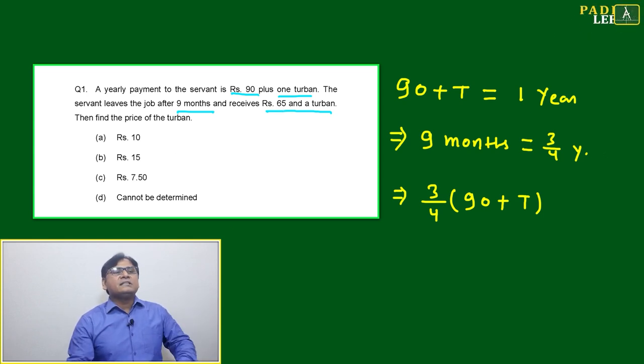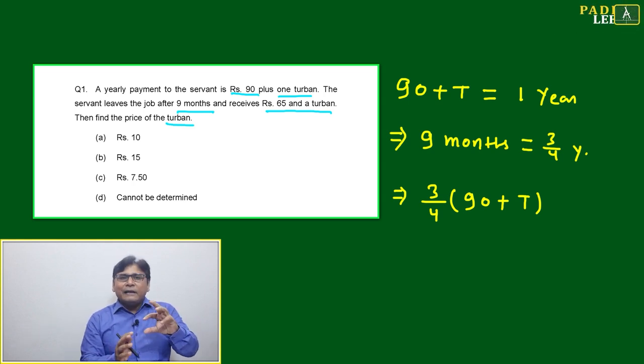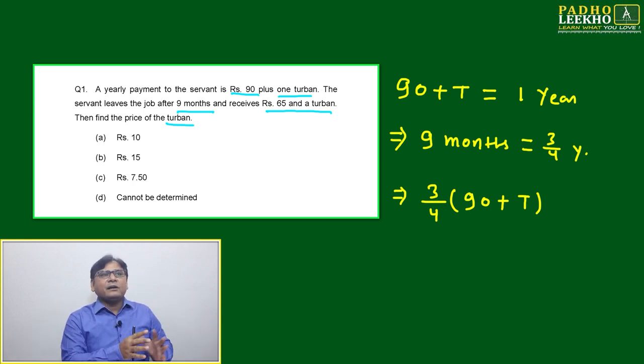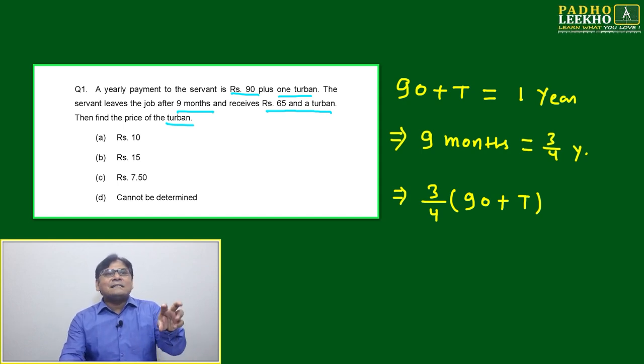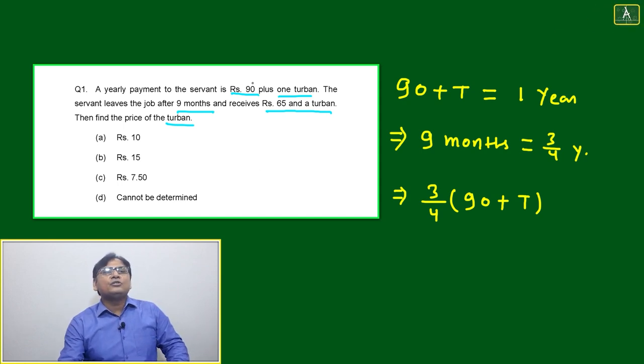Then find the price of turban. One thing is that turban cannot be made fractional - the owner cannot give half turban or 0.25 turban. Turban will be always one, either he will give or not give.